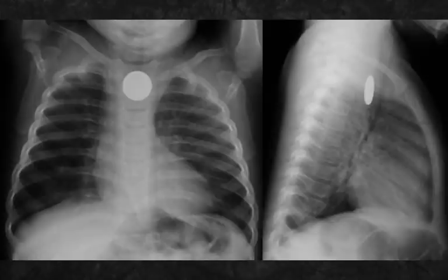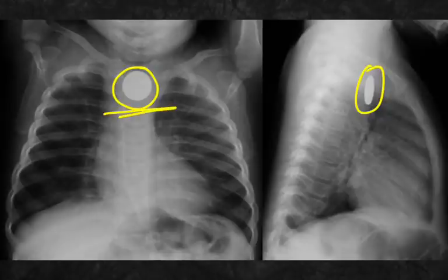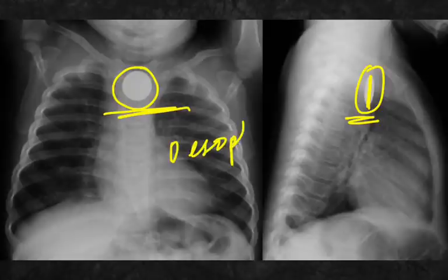This is a case scenario in which a child accidentally swallowed a coin-like structure. After doing an X-ray, a slit-like appearance is formed on the lateral X-ray, which confirms it is in the esophagus and not in the trachea.